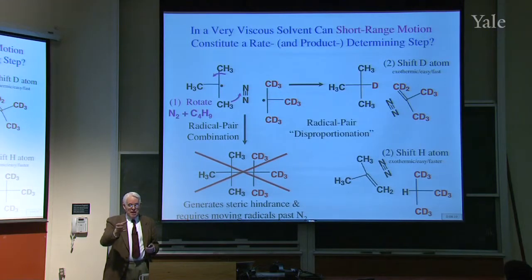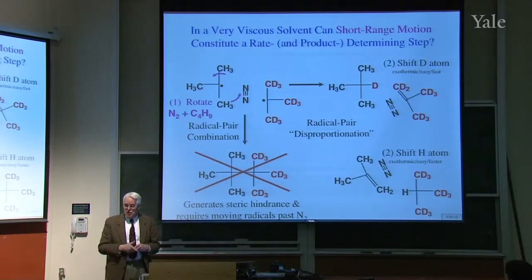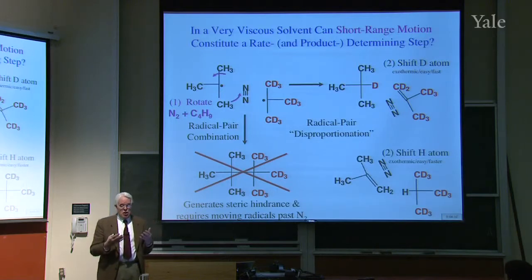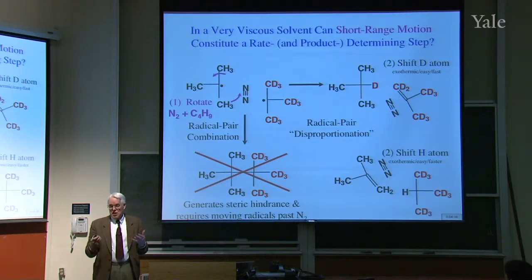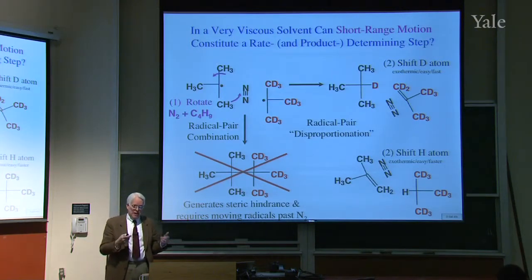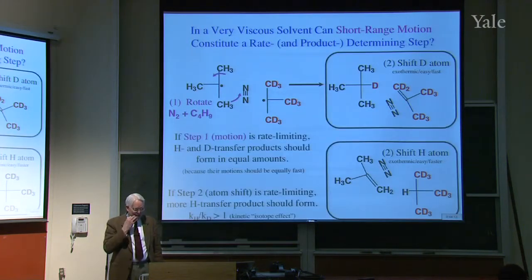So all he has to do to answer this question of whether this very subtle short-range motion, just this rotation, is rate limiting, is to make this compound, photolyze it to knock out the nitrogen, and see which products you get, whether the deuterium is in the alkane product or the alkene product. If it's 50-50, that says there wasn't a kinetic isotope effect, hydrogen was not being transferred when the product was being determined, the rotation was limiting. If there is an isotope effect, then that means the bond-breaking, not the motion, was rate limiting.